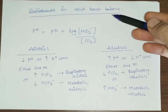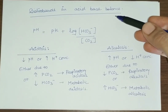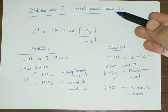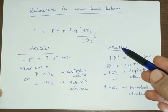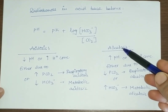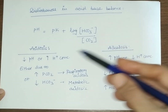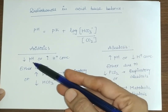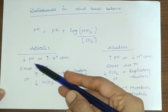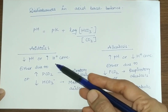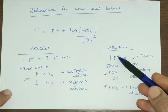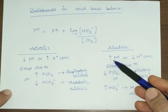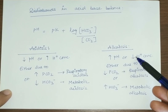Today we will discuss disturbances in acid-base balance. The major disturbances are either acidosis or alkalosis. Acidosis means a decrease in the pH of blood, or an increase in H+ ion concentration, whereas alkalosis means an increase in pH or a decrease in H+ ion concentration in blood.